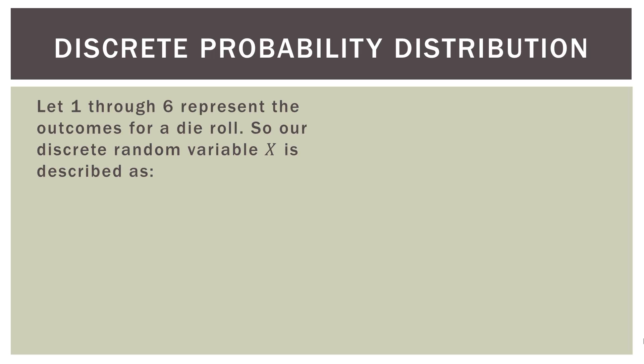Let's talk about another discrete random variable: the die roll. Let 1 through 6 represent the outcomes. So our discrete random variable X is described as the numbers 1, 2, 3, 4, 5, or 6. If we roll a die, we have 6 outcomes and only 6 outcomes — there are no in-between outcomes. We cannot roll a 4.3. It's either 1, 2, 3, 4, 5, or 6. That's what makes it discrete.